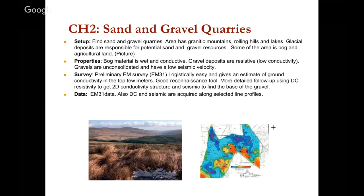In the very first lecture we toured Ireland, and there was one case history we haven't returned to: they were looking for sand and gravel quarries. Gravel is a commodity — if you can find it, you can make money. The area is mountainous with rolling hills, lakes, and glacial deposits, which gave rise to sand and gravel. There's also a lot of boggy, wet carbonate material that is very conductive, whereas gravel deposits — cobbles and stones — are resistant with low conductivity.